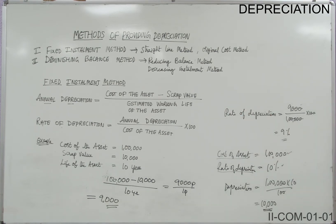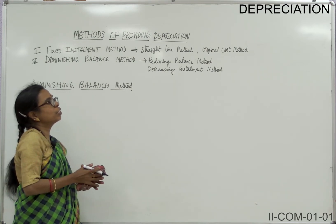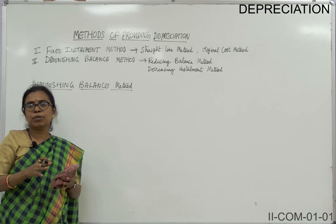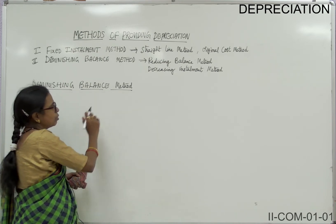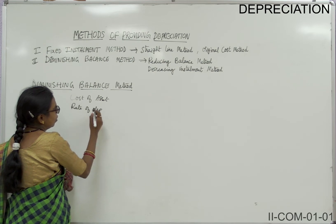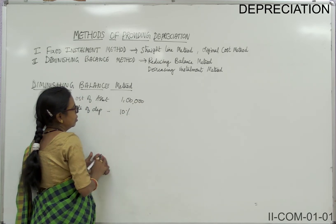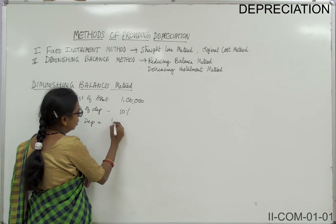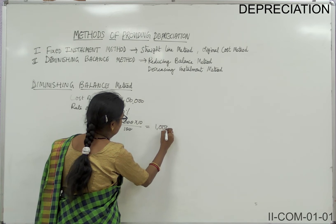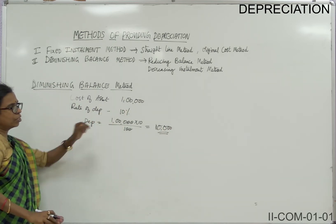The second method is the diminishing balance method, also called the reducing balance method or decreasing installment method. The amount of depreciation keeps reducing year after year because depreciation is calculated on the opening balance every year. For example, if the cost of the asset is 1 lakh and rate of depreciation is 10%, then first year depreciation equals 1 lakh into 10 by 100, which is 10,000.